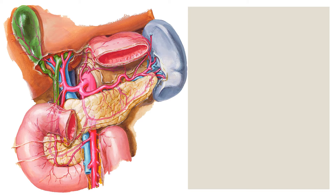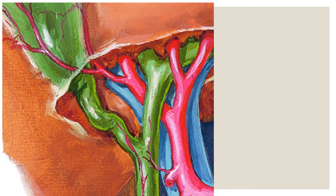Let us discuss about the boundaries of Calot's Triangle. Here we can identify this Calot's Triangle clearly in this picture. So below and laterally you can identify it is contributed by the cystic duct. Medially we can identify the common hepatic duct. And above and laterally we can identify the undersurface of the liver.